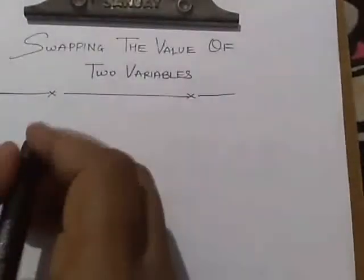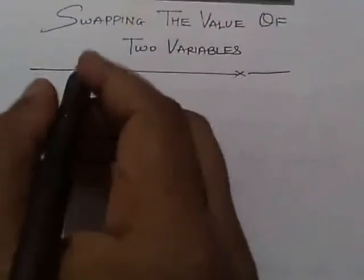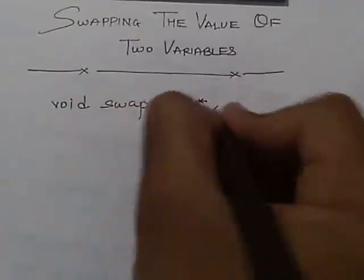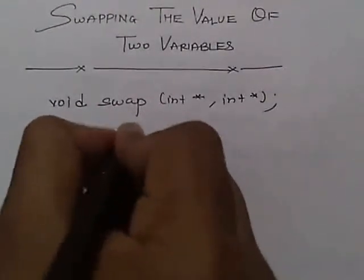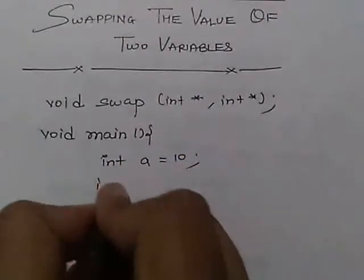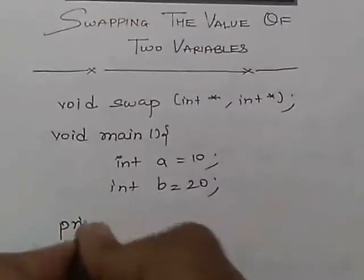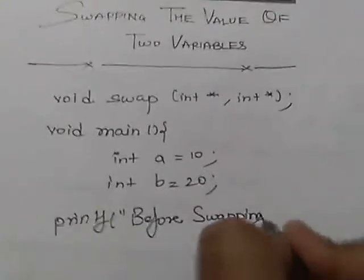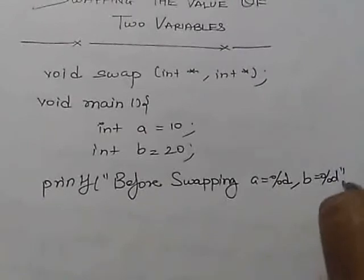We have to create a swap function. We are declaring a swap function, and inside that we have taken two integer pointers. Then we create a main function. Inside the main function, take two variables: integer a equal to 10, integer b equal to 20. Now give a printf statement before swapping: a equals %d, b equals %d, passing a and b.